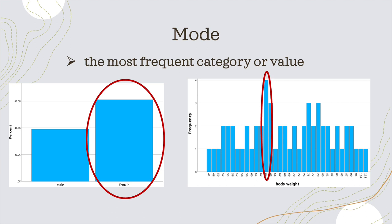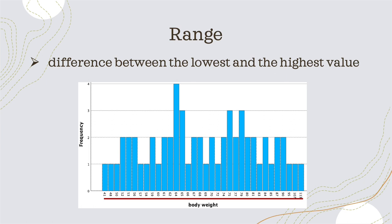We have more people in our sample who are female — there is a higher frequency of female patients — and thus being female is our mode. If we take the other example of body weight on the right side, we can see that most people in our study sample have a body weight of 64, so it is the most frequent one.